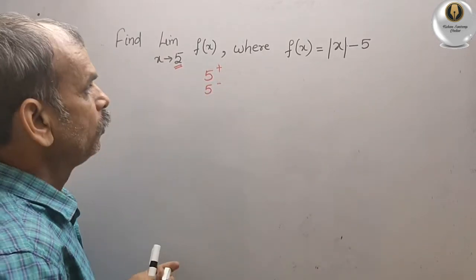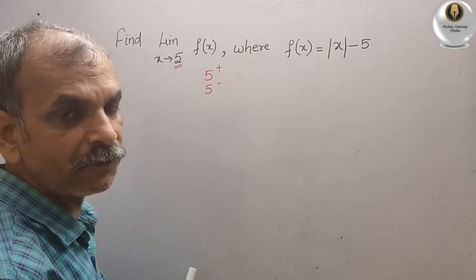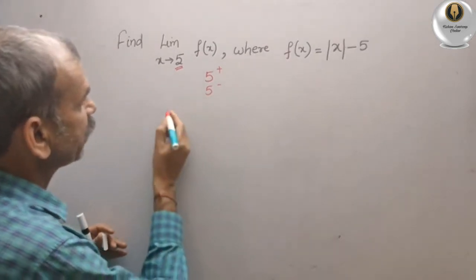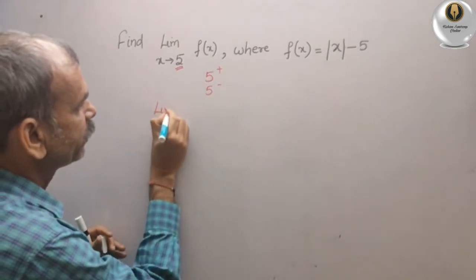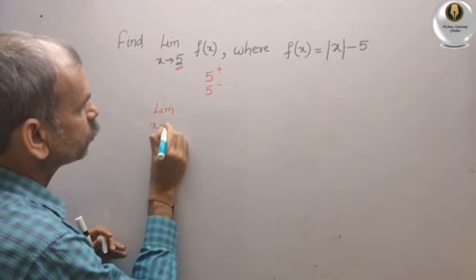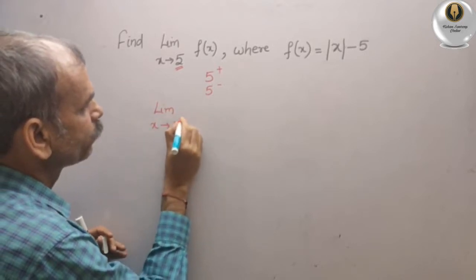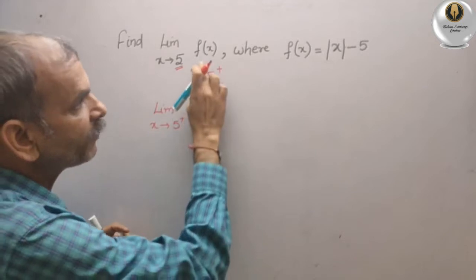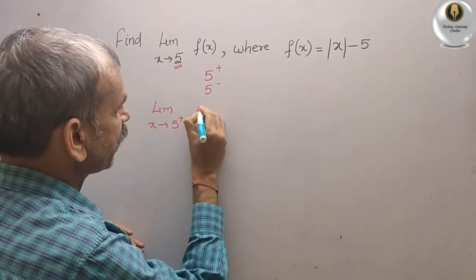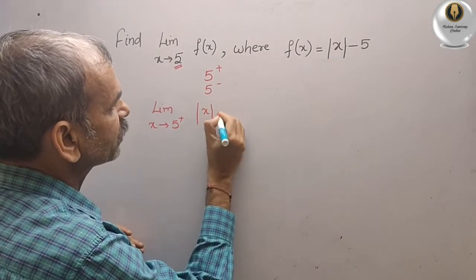Now, just we will write first plus one. So we will get what, limit x tends to 5 plus and f(x) is this one, so that is your modulus of x minus 5.